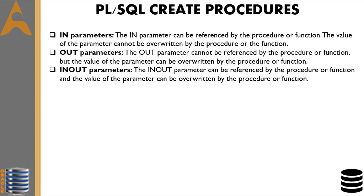IN parameters: the IN parameter can be referenced by the procedure or function, but the value of the parameter cannot be overwritten by the procedure or function. OUT parameters: the OUT parameter cannot be referenced by the procedure or function, but the value of the parameter can be overwritten by the procedure or function.